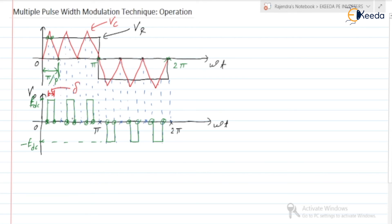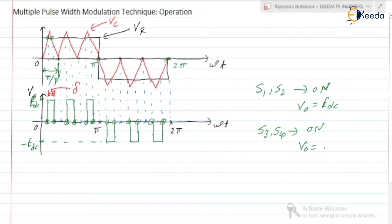As we know, in the single-phase full bridge inverter, when S1 and S2 are in the on state, V0 is equal to EDC. Similarly, when S3 and S4 are in the on state, V0 is equal to minus EDC. So in this way we can get the required output. Corresponding to each half cycle, the switches are turned on and turned off multiple times.